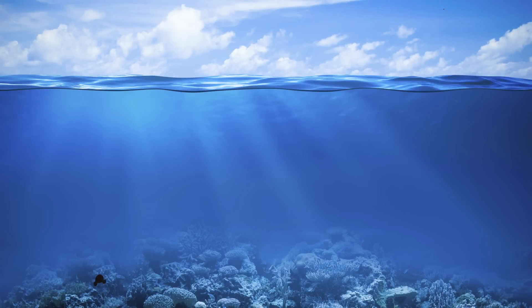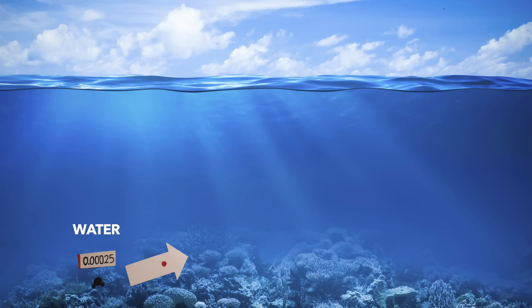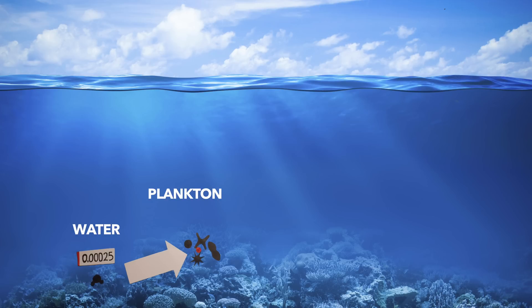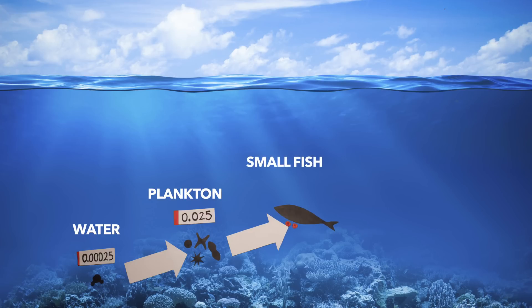Let's say there are 0.00025 parts per million of DDT present in coastal water. This means that plankton will ingest DDT along with their other sources of food. Over time, the concentration of DDT the plankton absorb from the water increases to 0.025 ppm in their body. Then, a small fish swims along. When it consumes its fill of plankton, the concentration of DDT it has ingested adds up to 0.5 ppm, which is greater than the concentration of DDT present in the plankton.